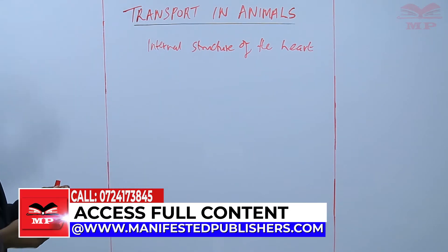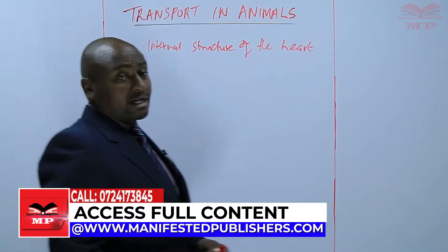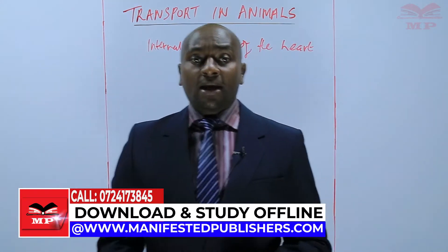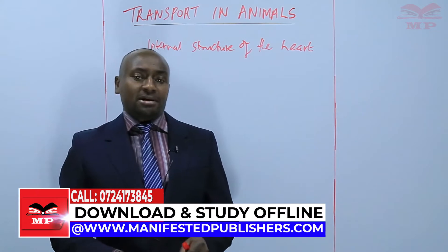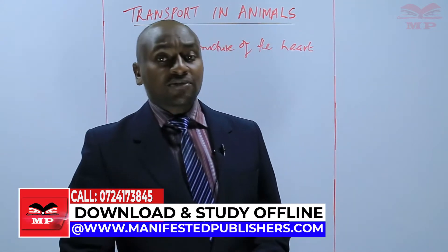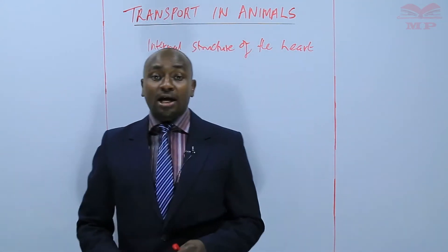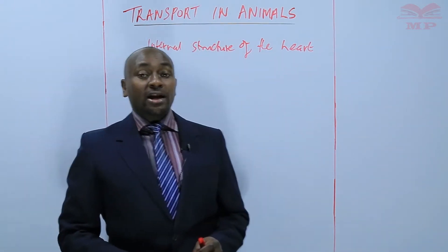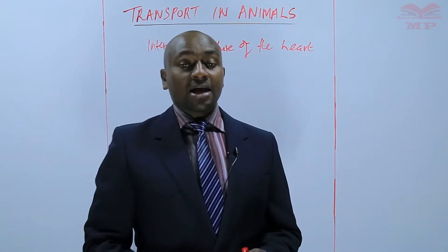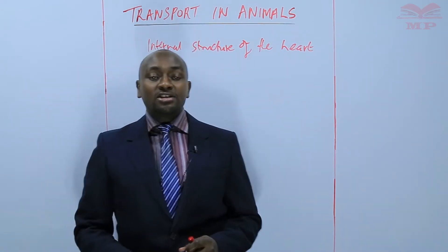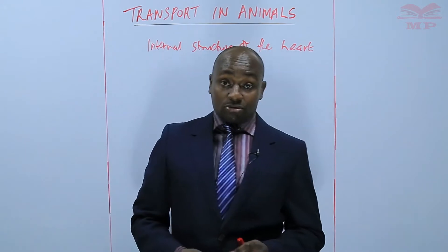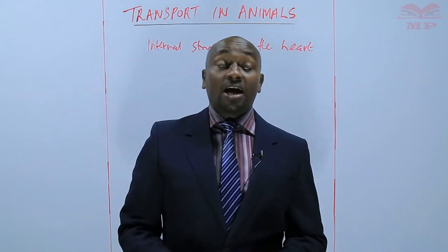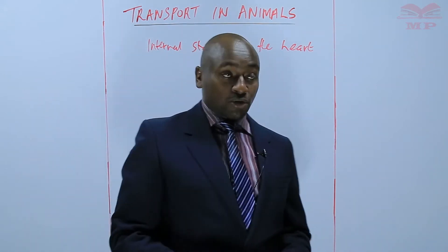The first thing about the internal structure of the heart — specifically the mammalian heart — is that it consists of four chambers. Two are on the right and two are on the left. The right two chambers are referred to as the right atrium and the right ventricle, while the left chambers are the left atrium and the left ventricle.